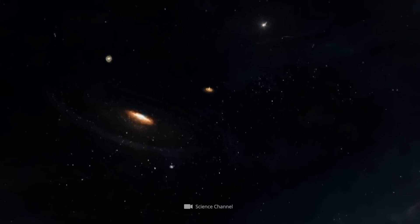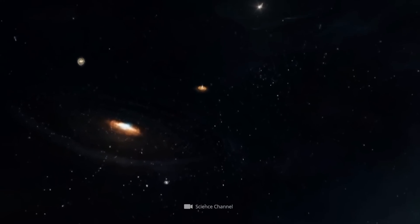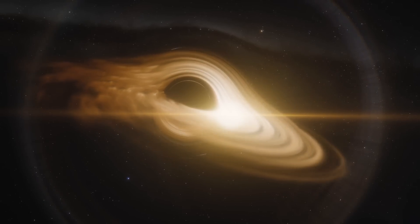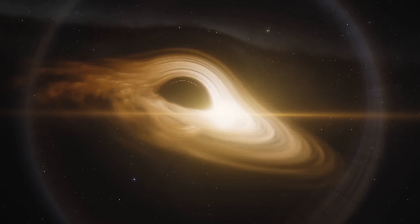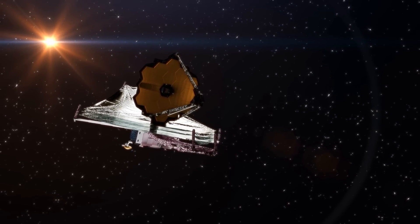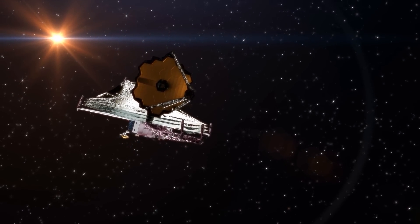The universe known so far includes everything we can identify in the cosmic landscape through our observations and measurements. The universe we can observe consists of galaxies, stars, planets, gas nebulae, black holes, and other cosmic objects. We can study these objects through telescopes and other instruments and measure their properties to learn more about their nature and composition.